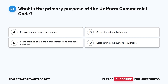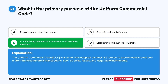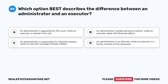Question 83: What is the primary purpose of the Uniform Commercial Code? A. Regulating real estate transactions. B. Governing criminal offenses. C. Standardizing commercial transactions and business practices. D. Establishing employment regulations. The correct answer is C. The Uniform Commercial Code (UCC) is a set of laws adopted by most U.S. states to provide consistency and uniformity in commercial transactions, such as sales, leases, and negotiable instruments.